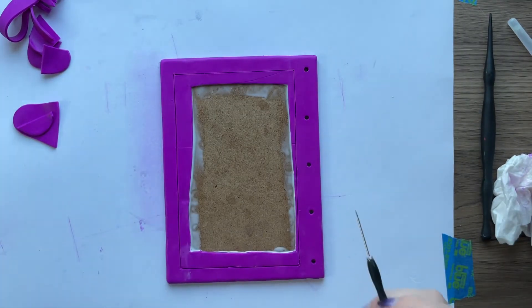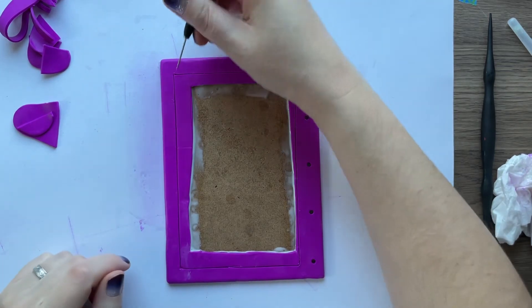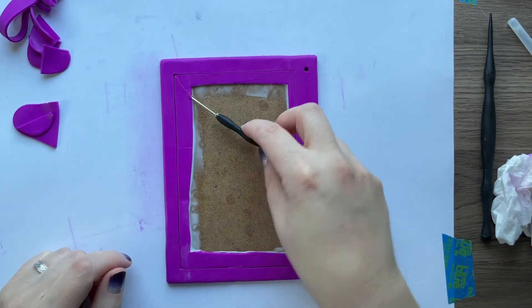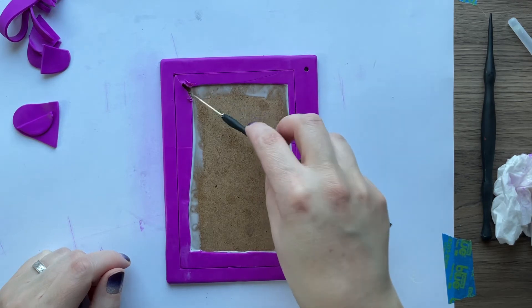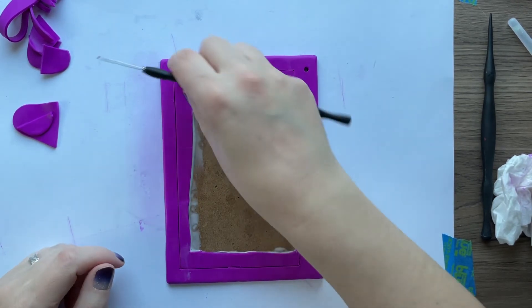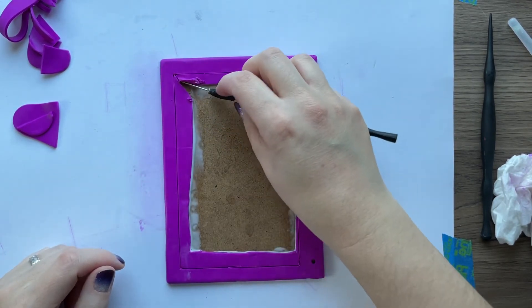So that way it's got a nice even border. I'm just gonna cut it. I know I haven't baked it yet or anything, so I'm just gonna kind of use my needle tool to kind of pull this off.